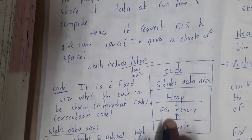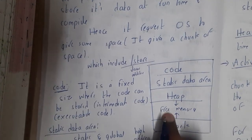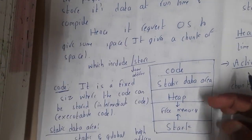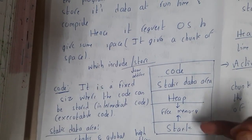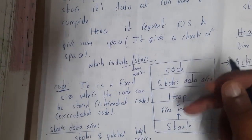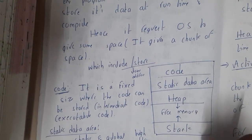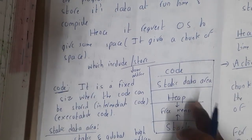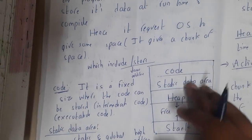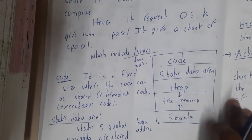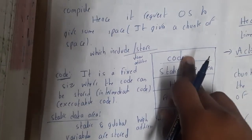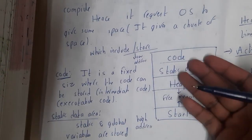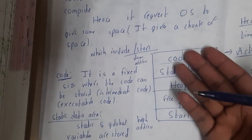The heap grows from top to bottom, that is from low addresses to high addresses, and the stack moves from high addresses to low addresses — it grows upward. The code segment includes the executable code — basically the final code which can be executed directly on a machine.